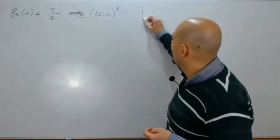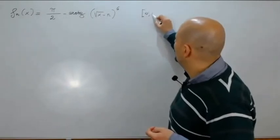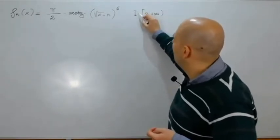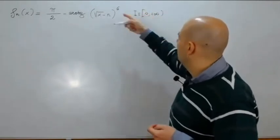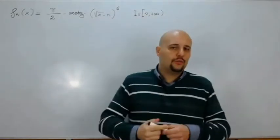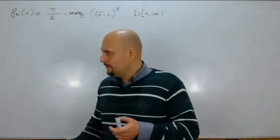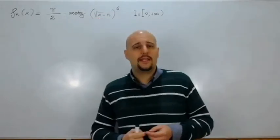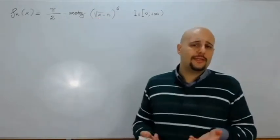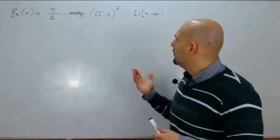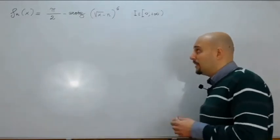Subito notiamo che [0, +∞) rappresenta sicuramente l'insieme di definizione della nostra successione di funzioni, visto che dobbiamo porre il radicando della radice quadrata maggiore o uguale a 0. x ≥ 0 vuol dire x ∈ [0, +∞).